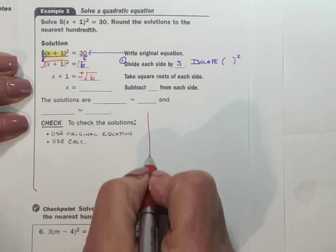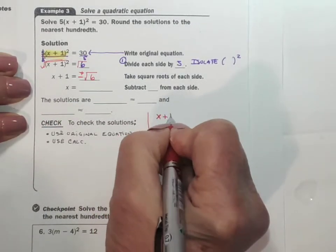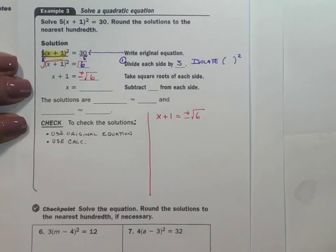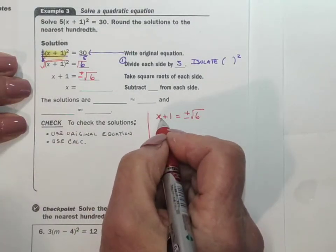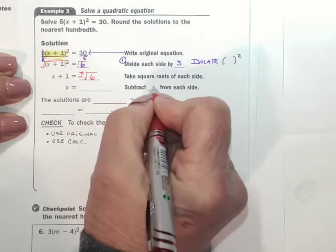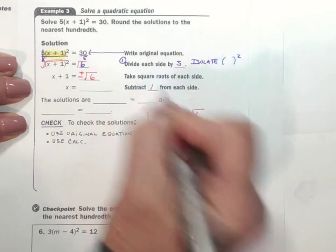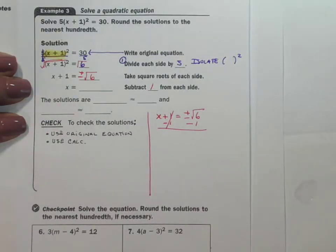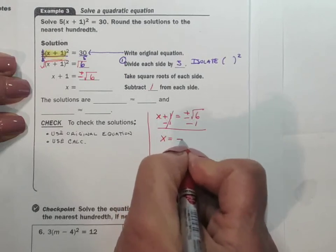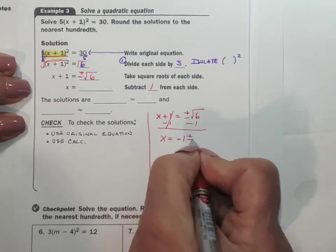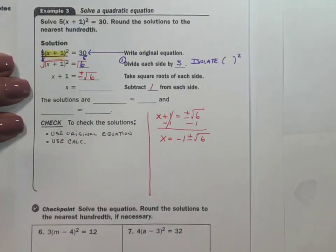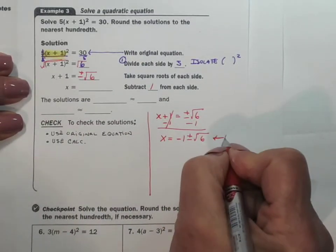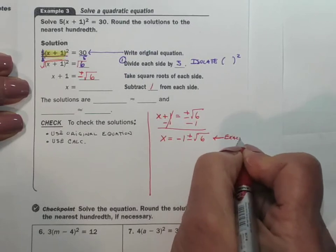I'm going to rewrite this problem down here. So here we have x plus one equals plus or minus the square root of six. We need x by itself, so we need to subtract one from both sides. So we're going to get x equals negative one plus or minus the square root of six. That is an exact solution.